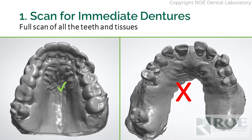Let's start with number one: scanning for immediate dentures. Doctors would simply scan the entire land area — this is key. Often we get images where the palate is left out and key landmarks are left off. We really need to have the full palate all the way back to the vibrating line. If you have a patient who is a gagger or you just can't capture the palate, then plan B would be to take alginates, pour them up in stone, and scan the stone models. It's not as direct, but it's better than shipping models to the laboratory.